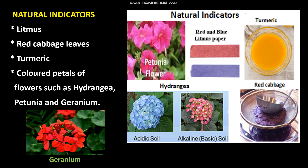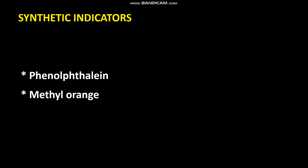Examples of natural indicators include litmus, red cabbage leaves, turmeric, and colored petals of flowers such as hydrangea, petunia, and geranium. You might have noticed that if turmeric-stained curry falls on a white cloth and you wash it with soap, it turns reddish-brown. That means turmeric is an acid-base indicator — it shows different colors in acidic and basic substances.